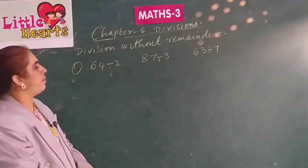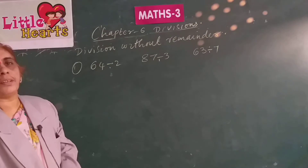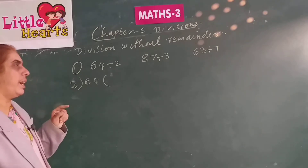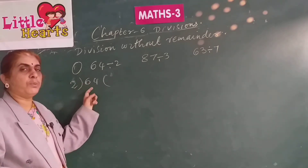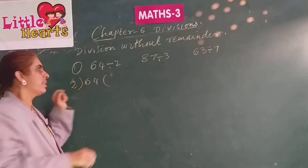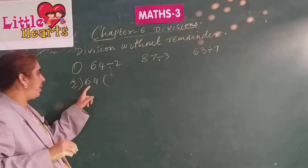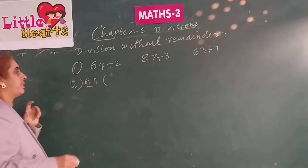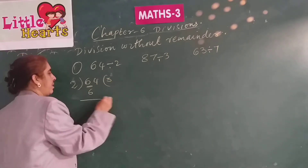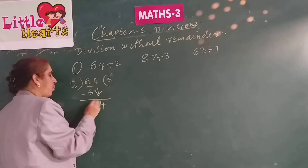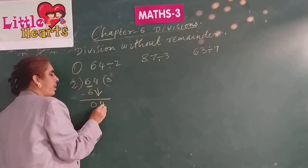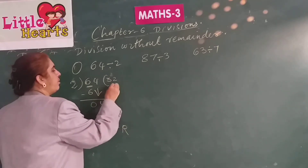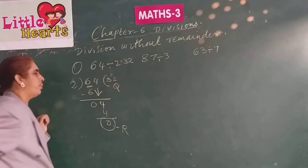Division of a 2-digit number by a 1-digit number without remainder — that means the remainder will be 0. Take 64 divided by 2. For division, always start dividing from the tens place. As the tens digit 6 is greater than 2, consider only 1 digit: 6. Read 2 times table: 2 threes are 6. Bring down 4. Read 2 table until you get 4: 2 twos are 4. So the coefficient is 32. 64 divided by 2 equals 32.